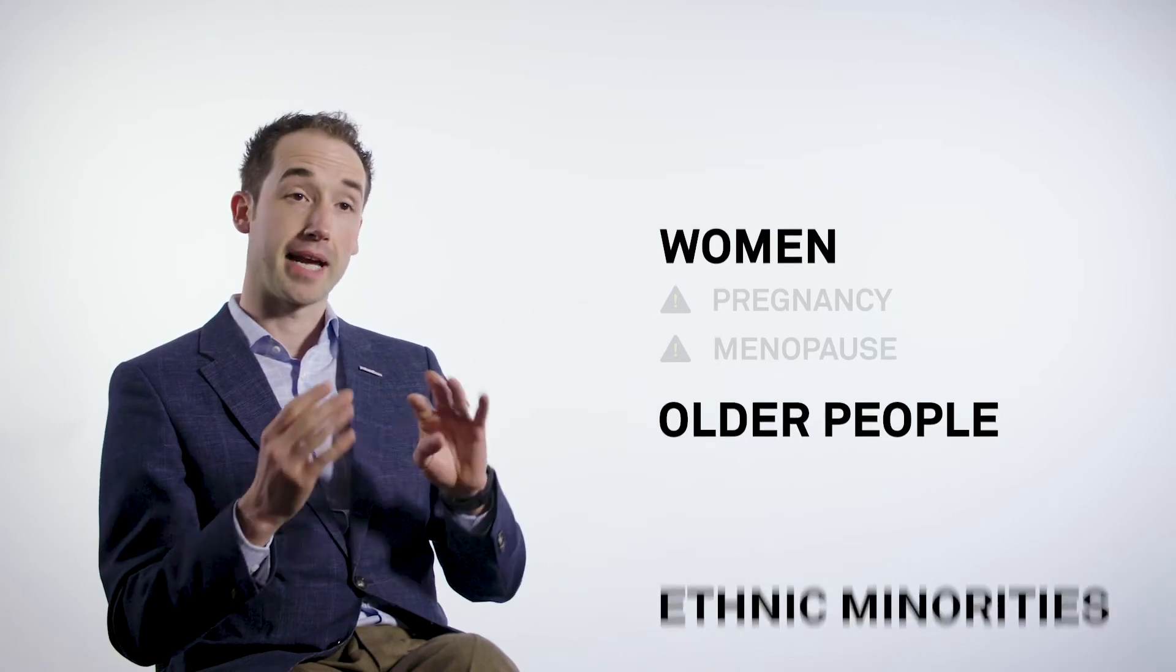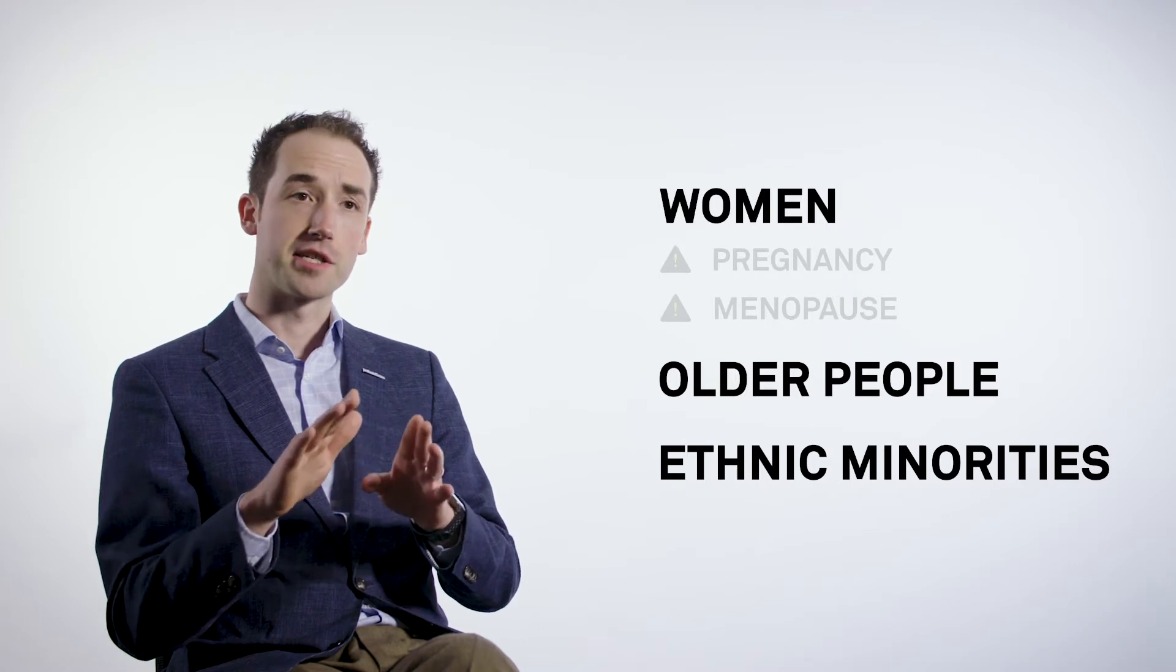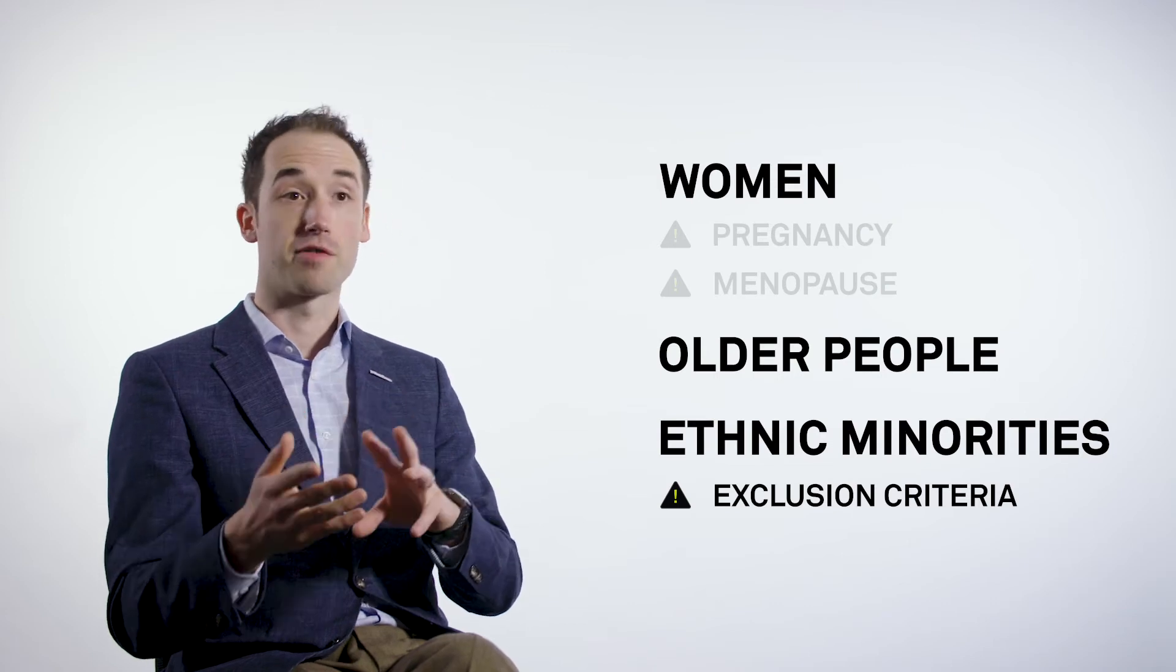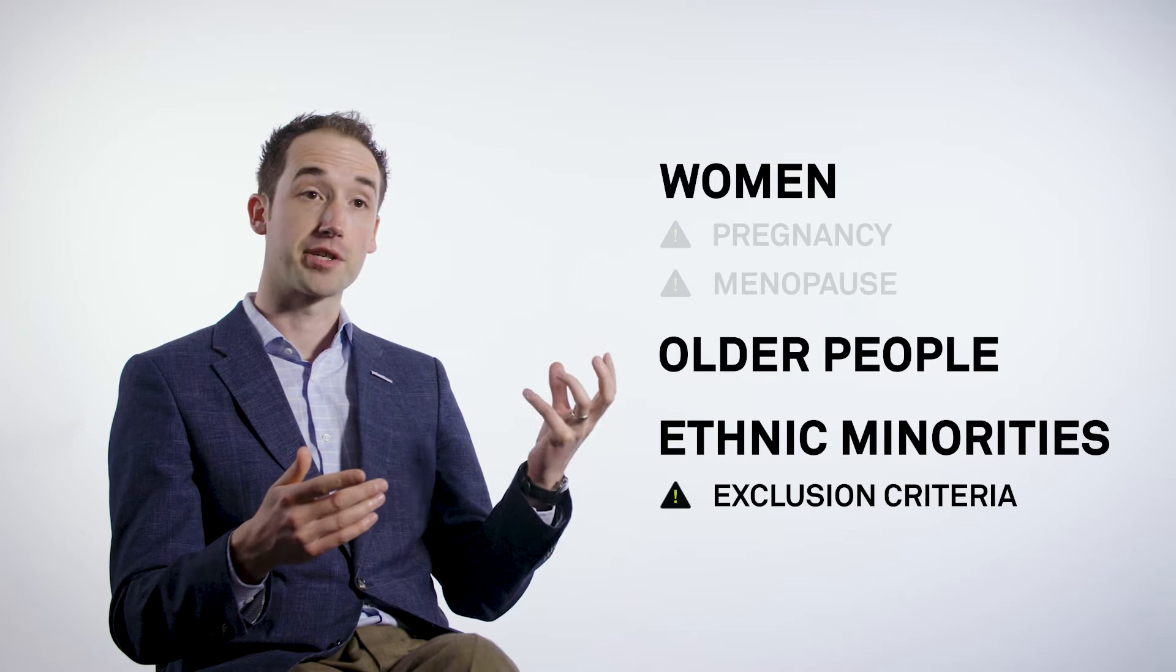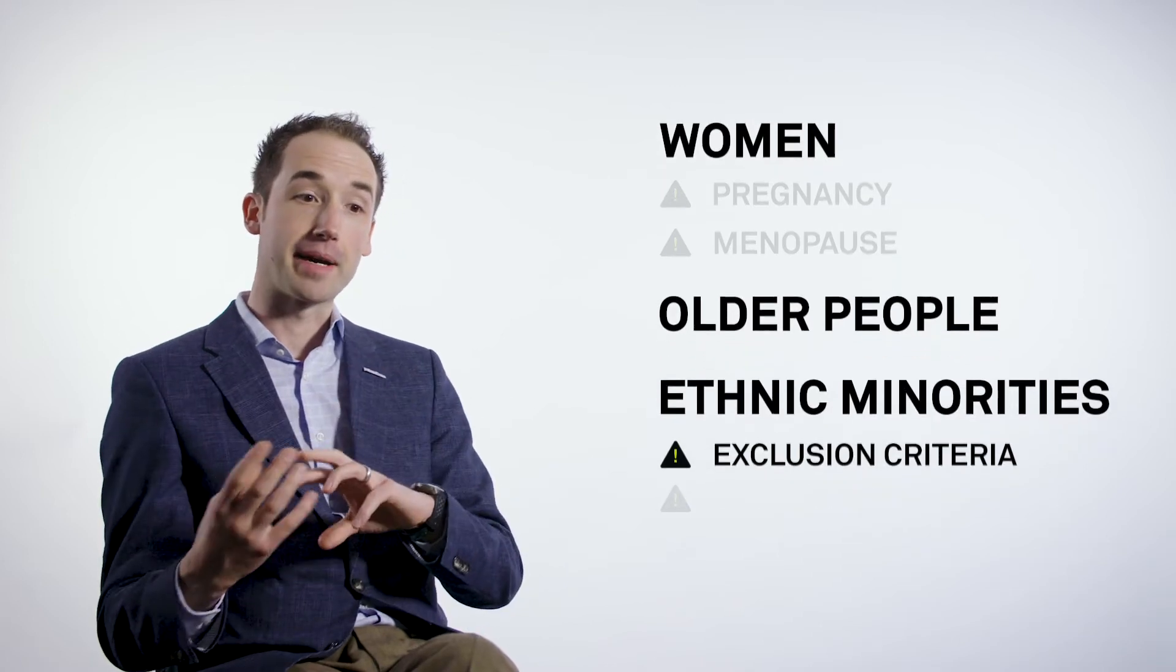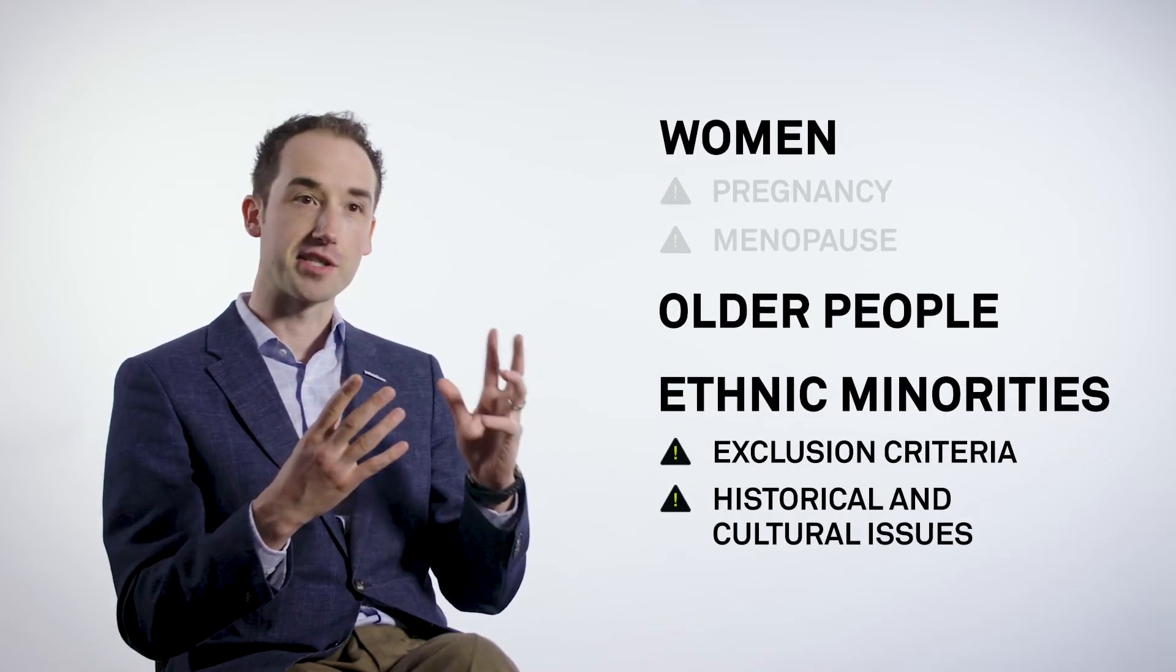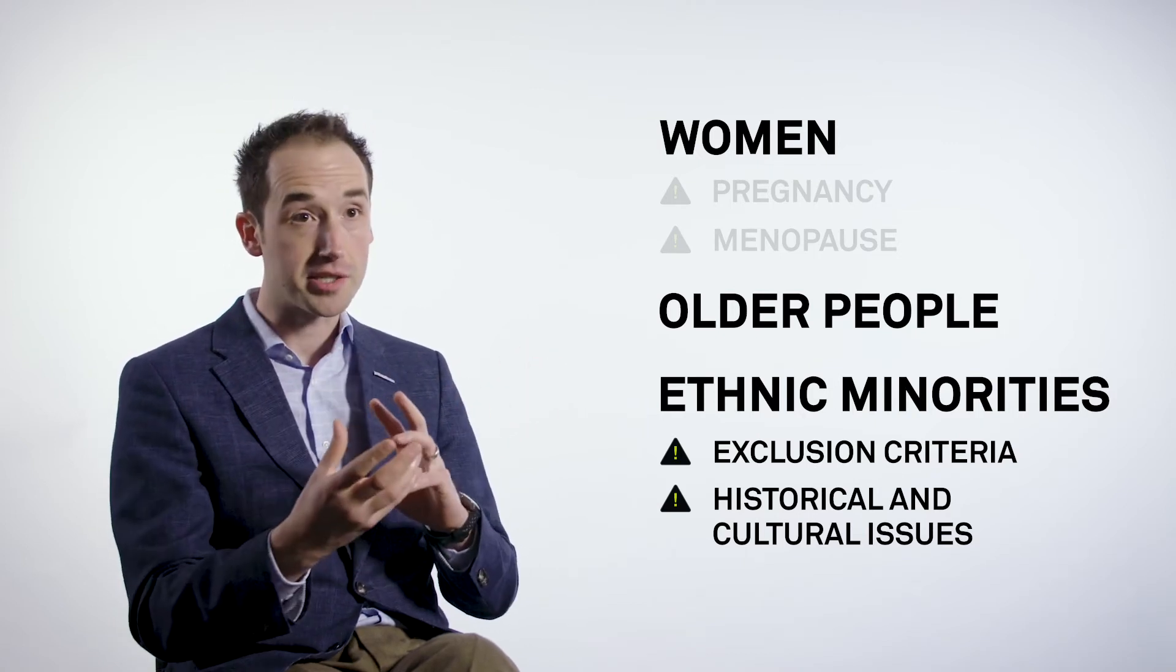I think in terms of black and ethnic minority populations, they may be underrepresented in trials for at least two reasons. One is that they may end up excluded from some of the exclusion criteria. So for example, in the United States, African Americans are at a higher rate of risk of diabetes and cardiovascular disease. Those are frequently exclusion criteria for trials. The other thing to think about is some of the historical and cultural issues. We have things like the Tuskegee Syphilis study in America or the story of Henrietta Lacks that I think have been the basis for a lot of mistrust.